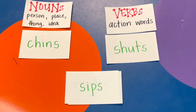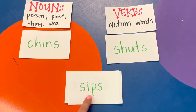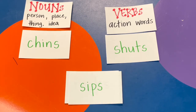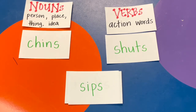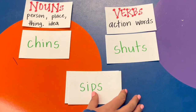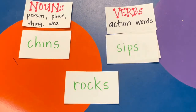Try this one: sip is the base word. Sips is the whole word. Is sips a person, place, thing, or idea? Or is sips an action word? Think of the sentence: Miss Blaney sips her coffee. Very good - it's an action word, something you do. It's a verb. Here comes another one.